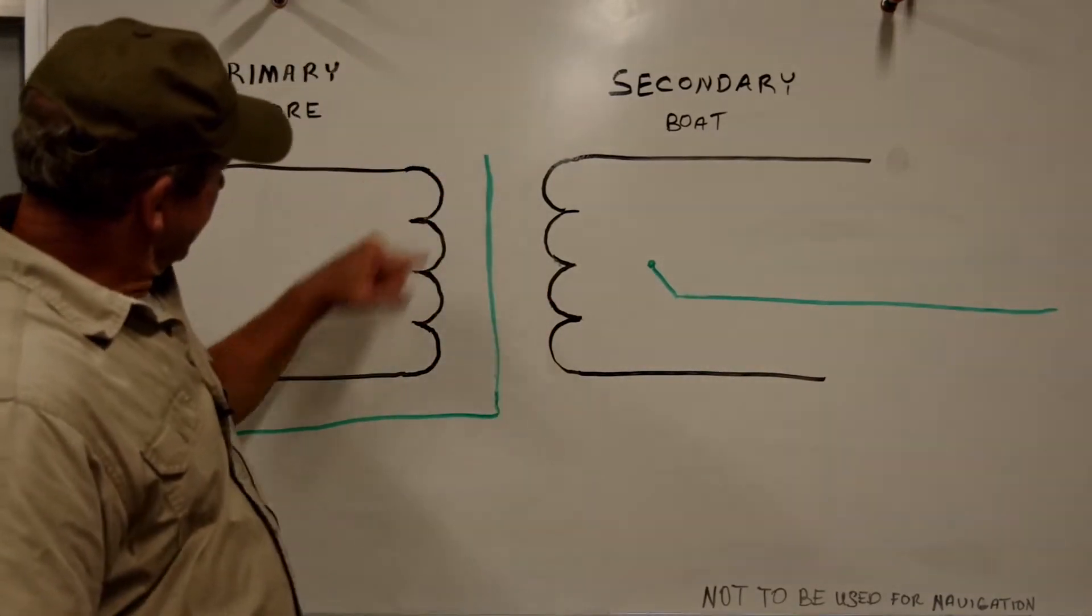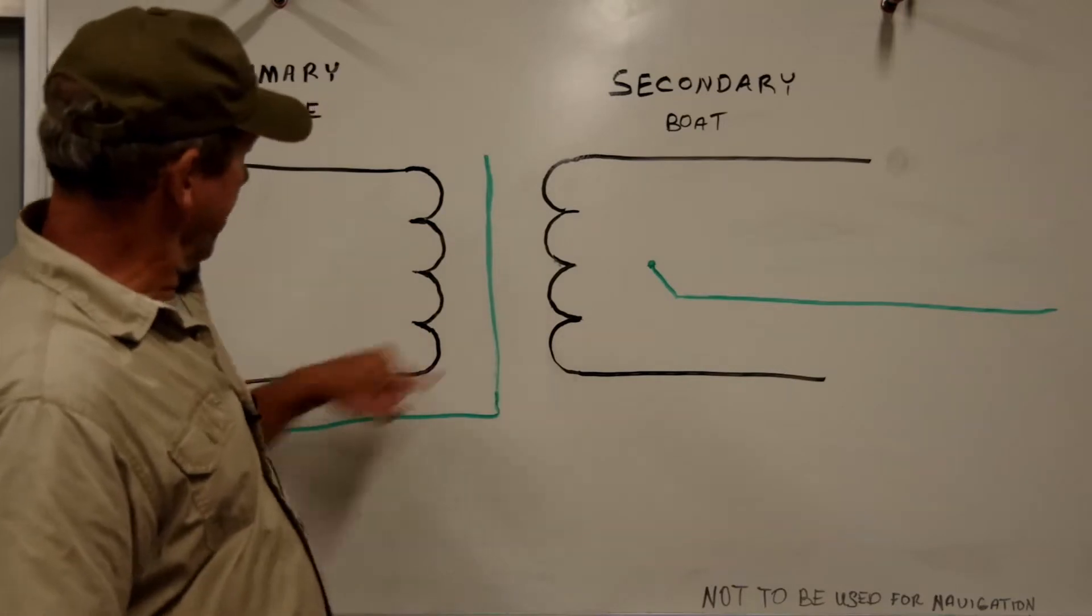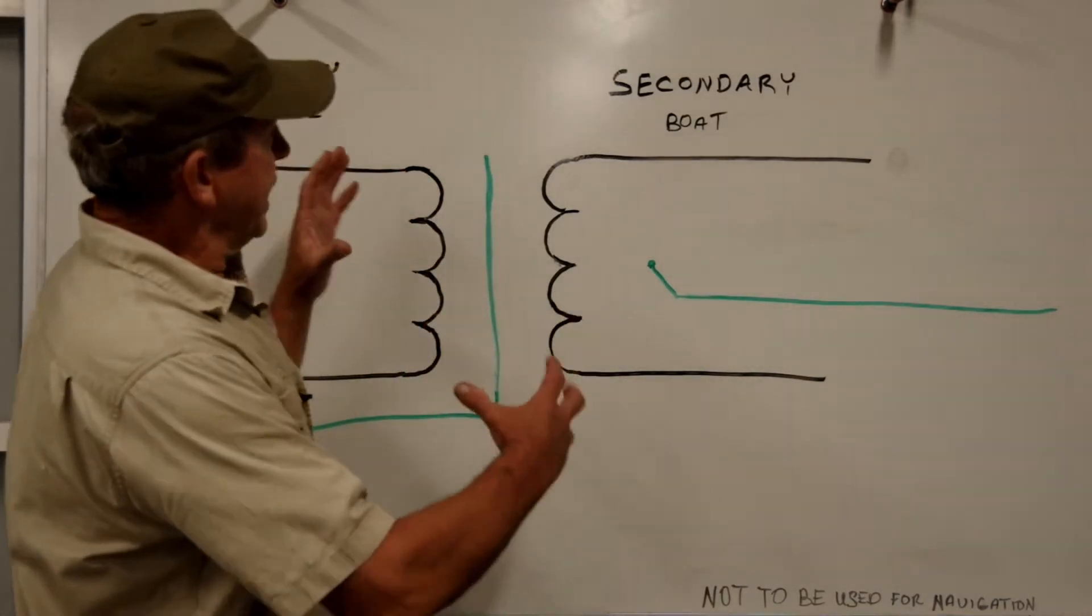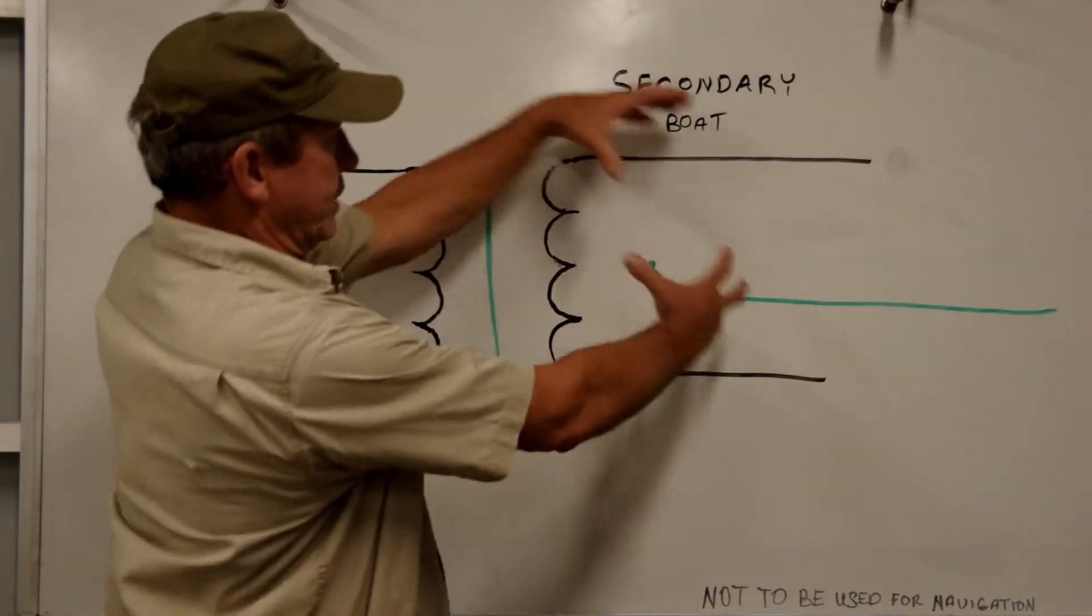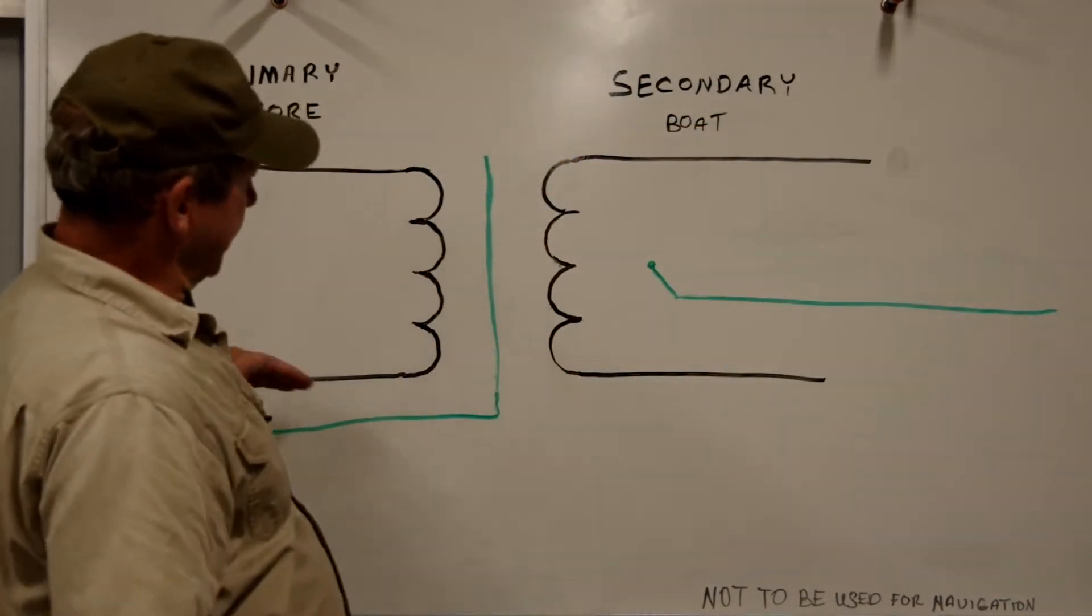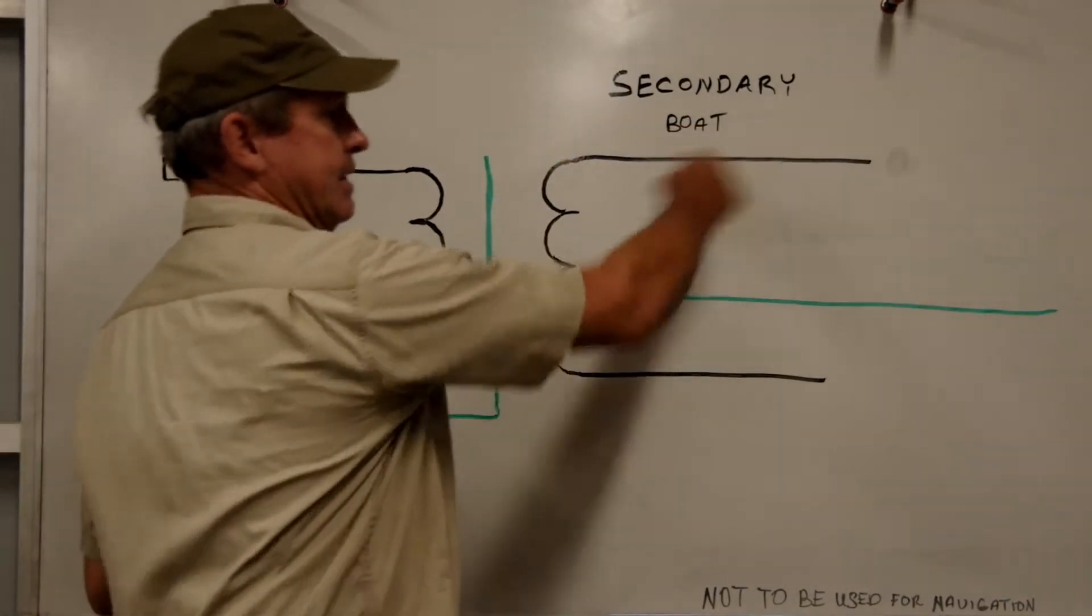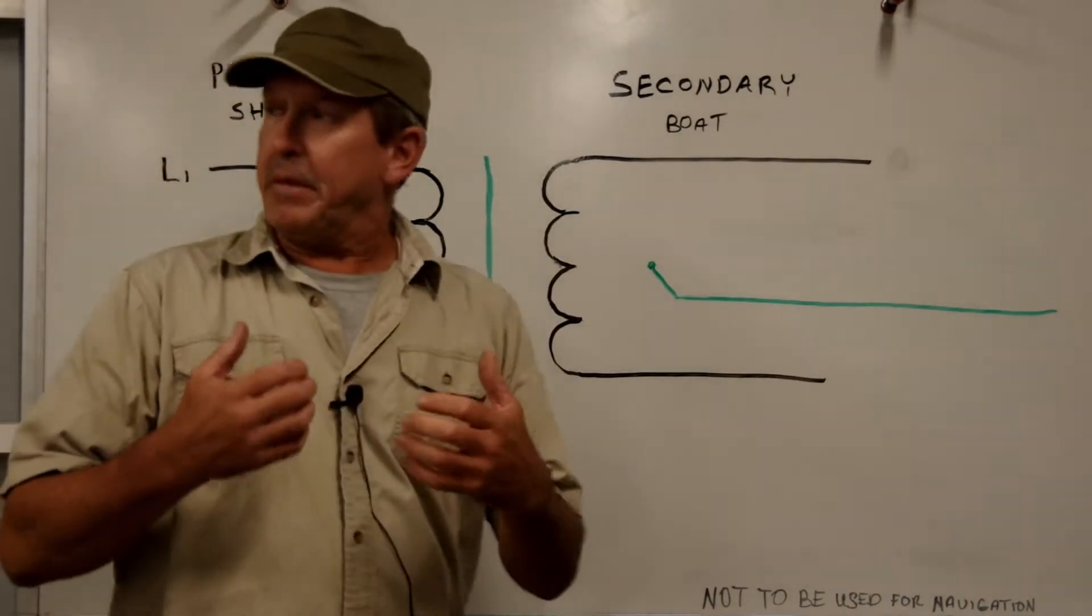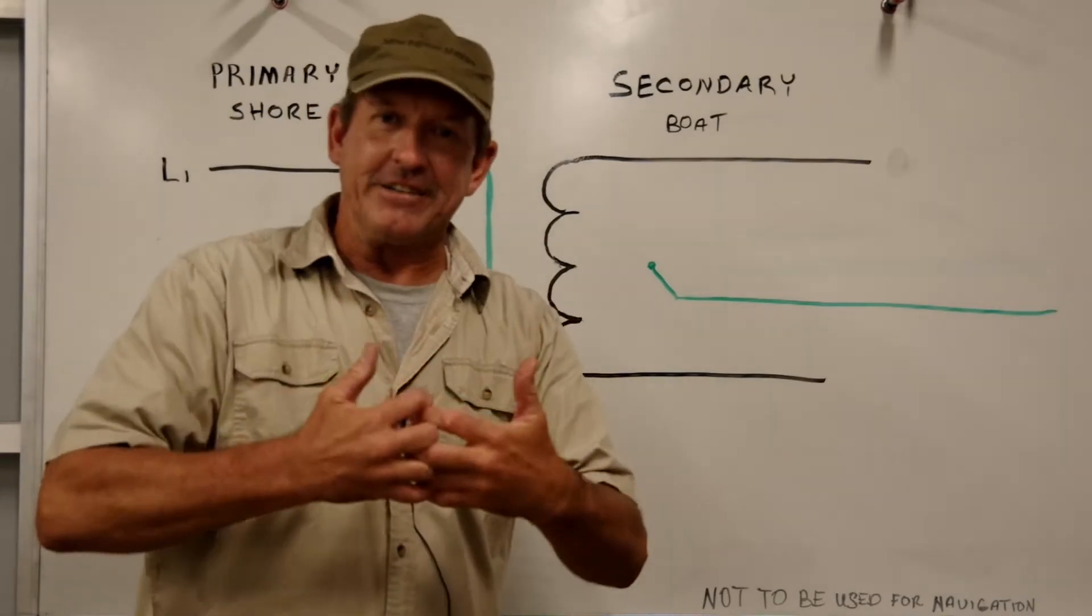What's happening is as our current is flowing through our primary here, alternating back and forth, we're creating a magnetic field, and that magnetic field is being transferred to this side. So whatever is happening over here is happening over here without being physically connected. It's pretty cool.